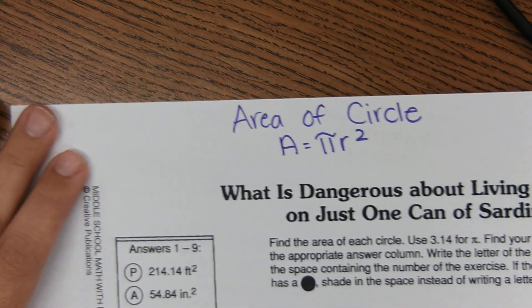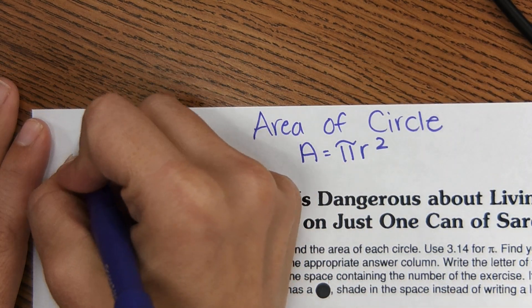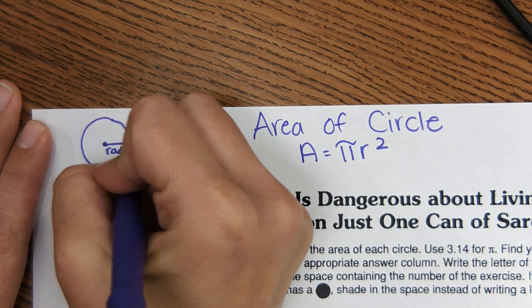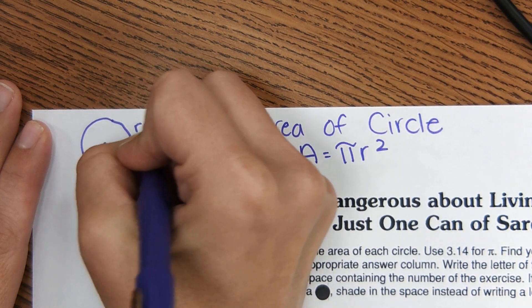R stands for radius, and what radius is? Radius is halfway across the circle, so this is radius. R equals radius.